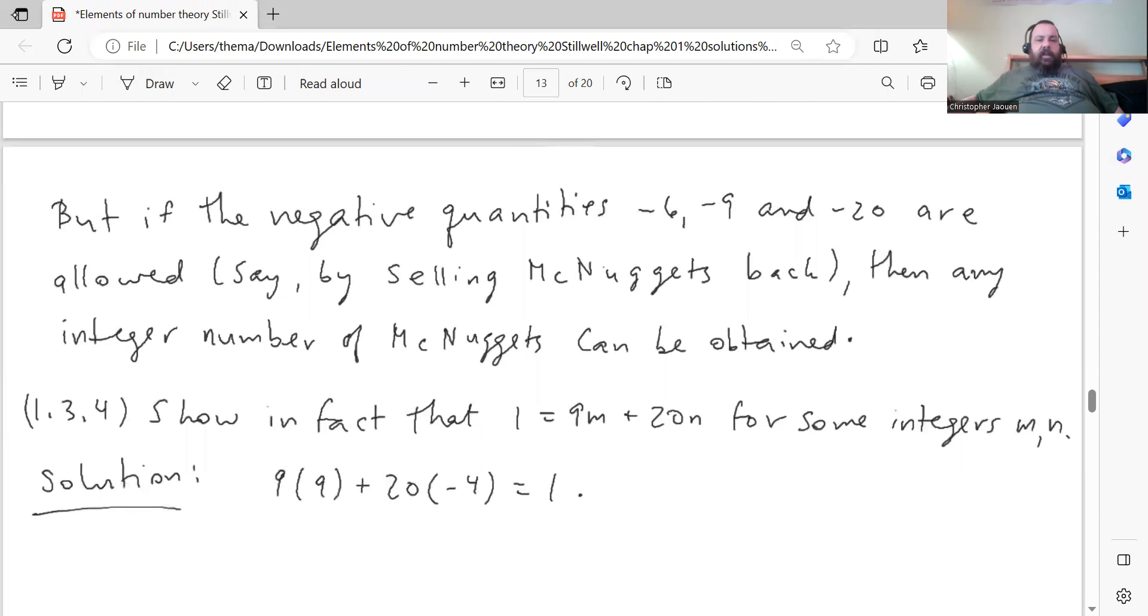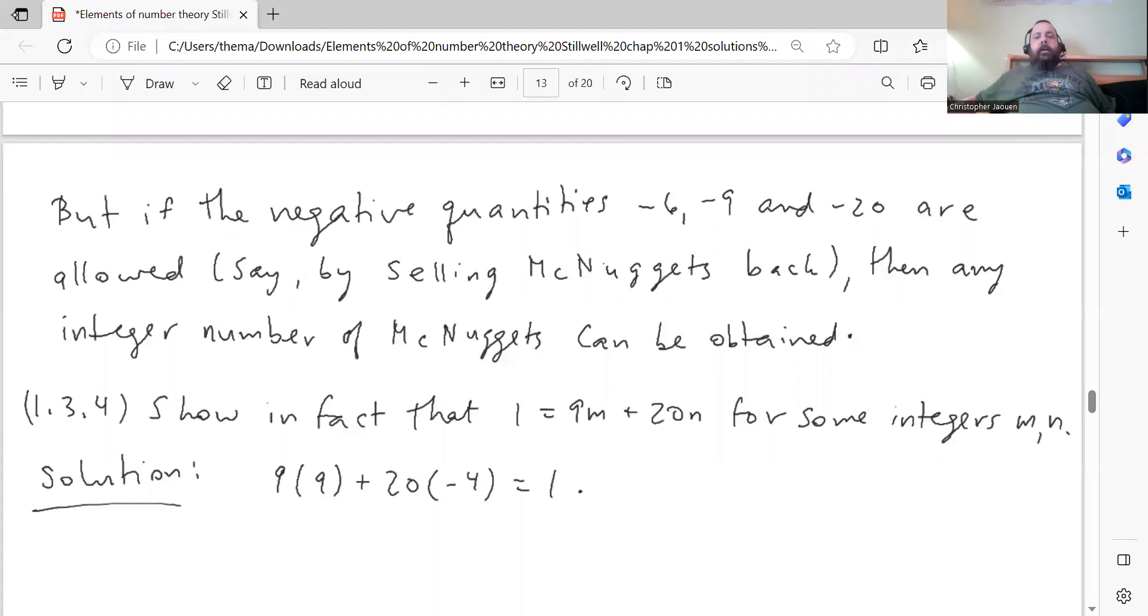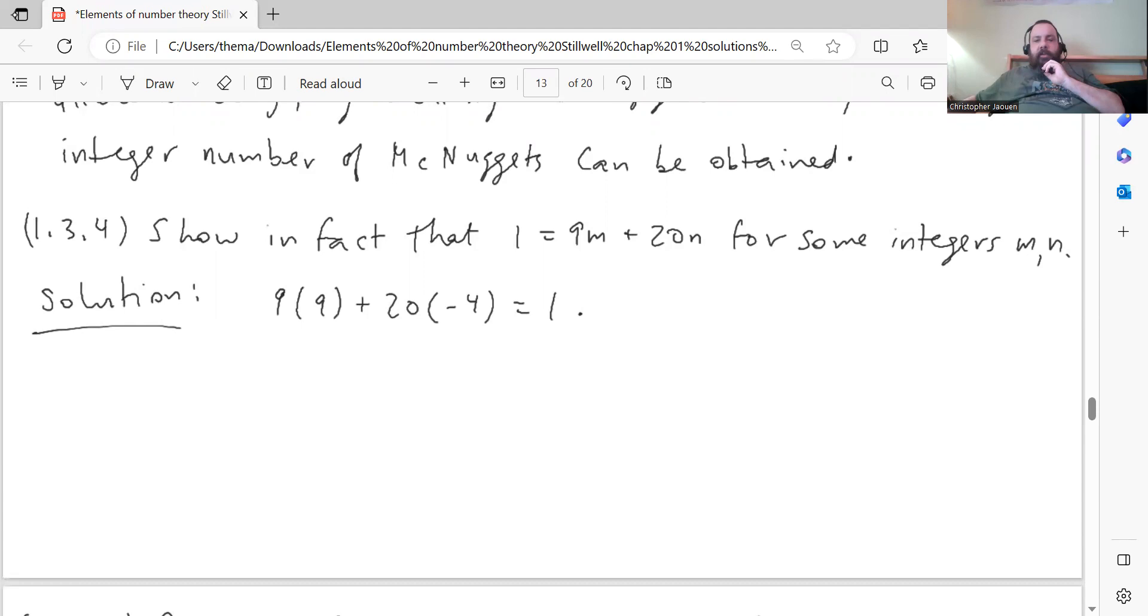Next problem: if the negative quantities negative 6, negative 9, and negative 20 are allowed, say by selling McNuggets back, then any integer number of McNuggets can be obtained. In other words, he's saying if you can use integers instead of just natural numbers, show that you can get any number of McNuggets. Problem 1.3.4: Show that 1 equals 9m plus 20n for some integers m and n. I just found the numbers. So 9 times 9 plus 20 times minus 4 gives you 1. In other words, 81 minus 80 gives you 1.